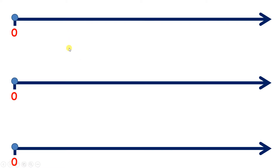On these top two number lines I'm going to count in steps of three. I'm going to write out the three times table, and on this number line at the bottom I'm going to add the numbers in the top two lines — you'll see why I'm doing that in a moment.